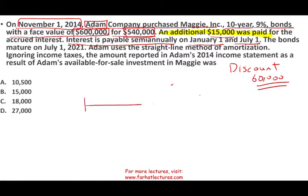Here's what you need to understand — this is the timeline. Interest for this bond is paid on January and July. Adam purchased the bond on November 1st. When you purchase the bond, the buyer — Adam — will have to pay the seller accrued interest. Adam happens to pay the seller $15,000 of accrued interest. The bond matures on July 1st, 2021. This is important because we need to know how we are going to amortize the discount.